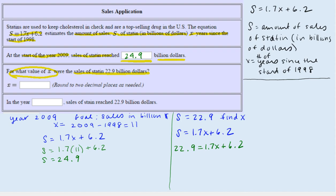Let's take a minute to remember what this means. This means if we take X and multiply it by 1.7 and then add on 6.2, the result would be 22.9. So it's X times 1.7 plus 6.2 would give us 22.9. Now we want to reverse this process.